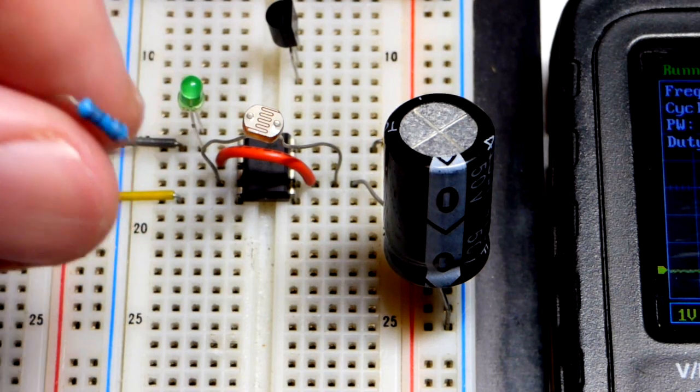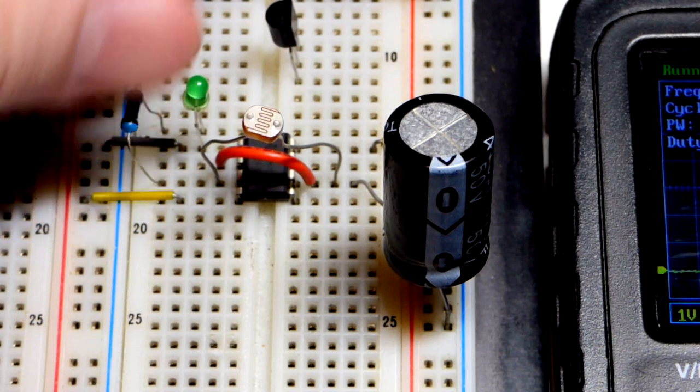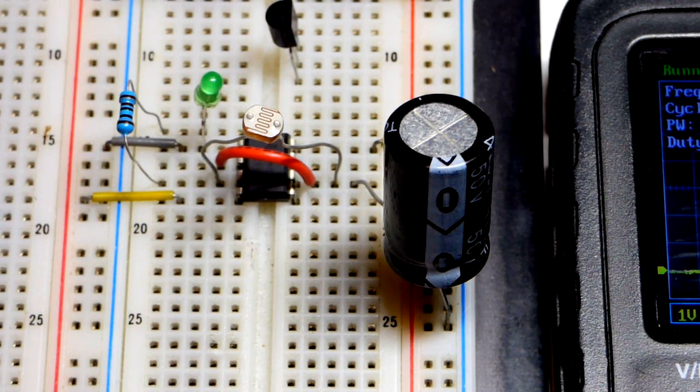So we're going to protect that with the one kilo-ohm resistor. We could go lower. I'm only working with five volts here, but this green LED should still be fairly bright. So that's it.